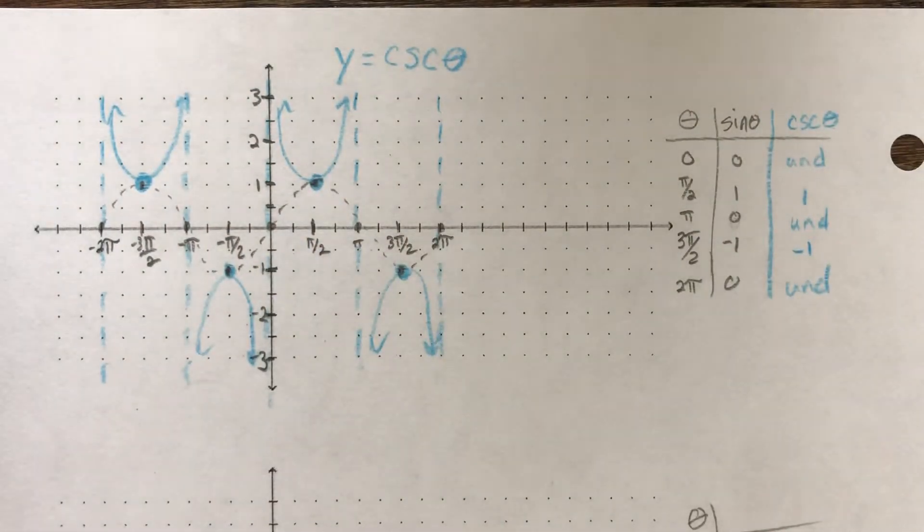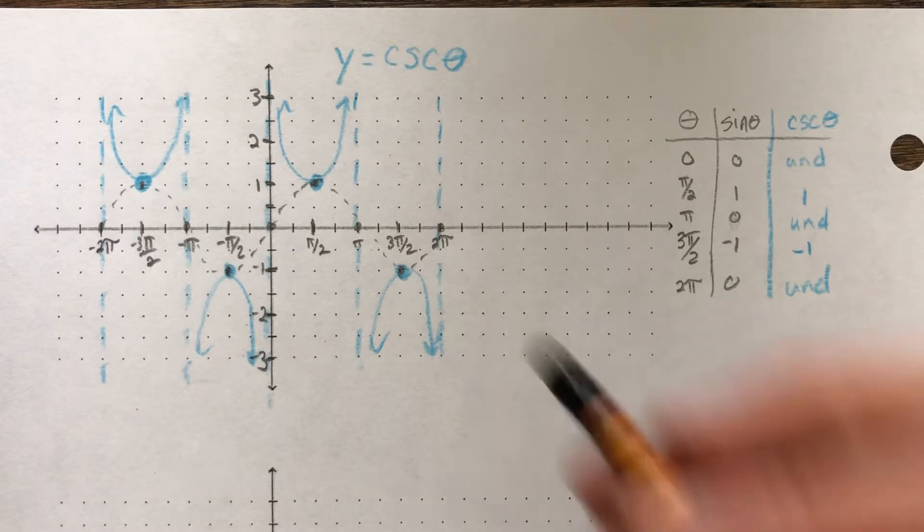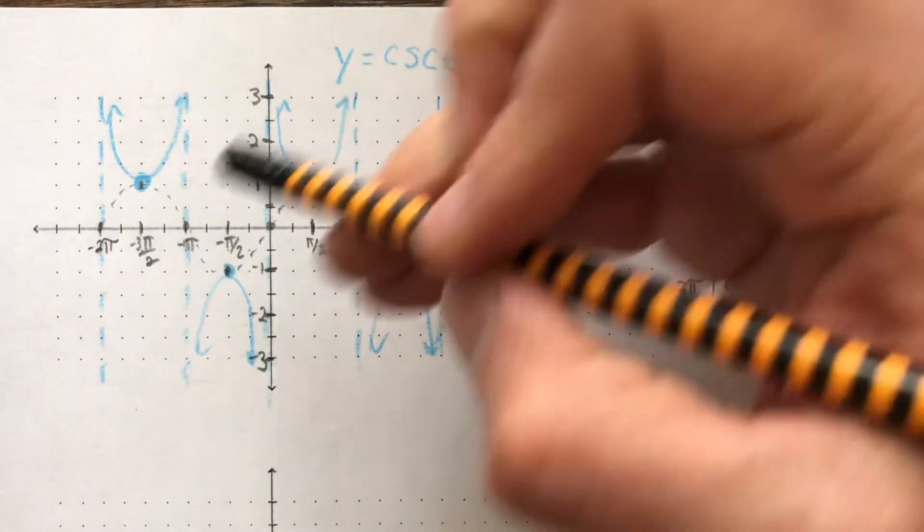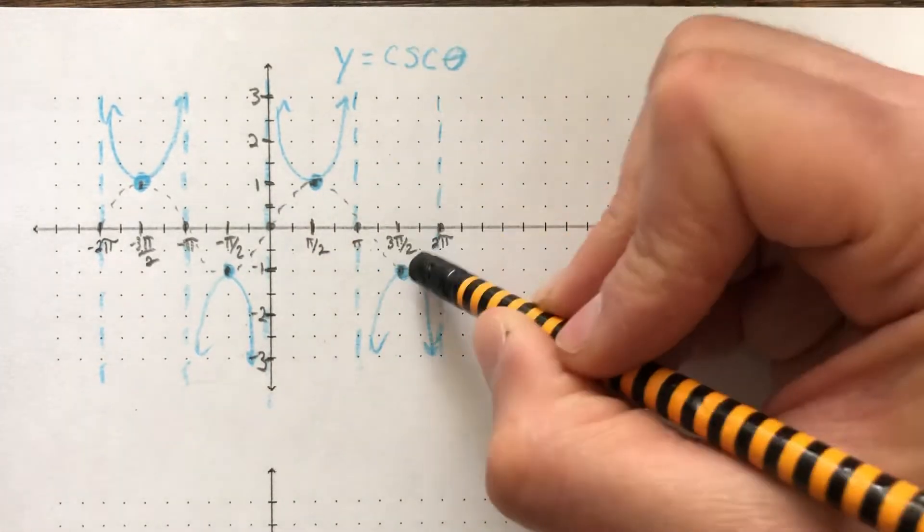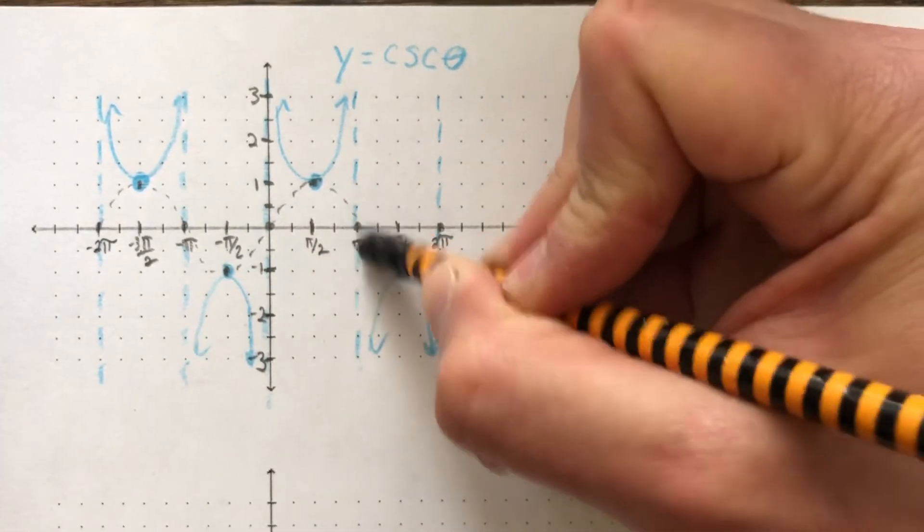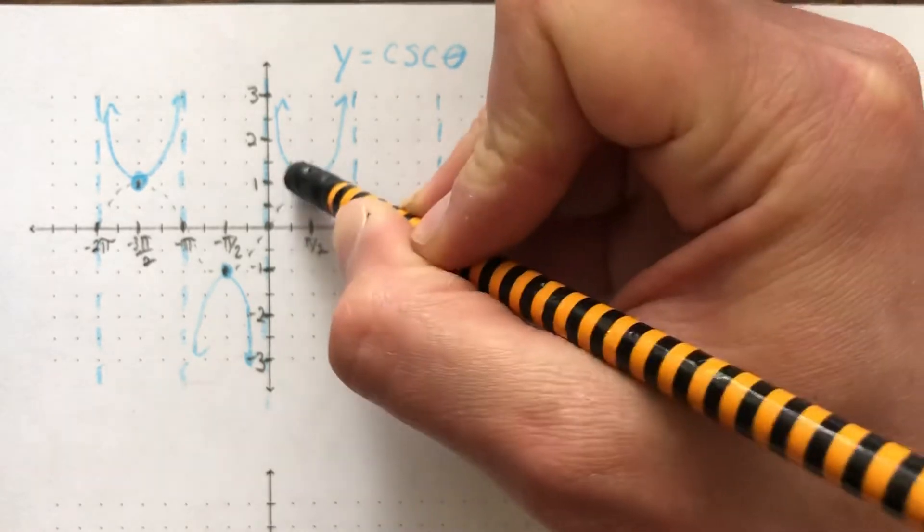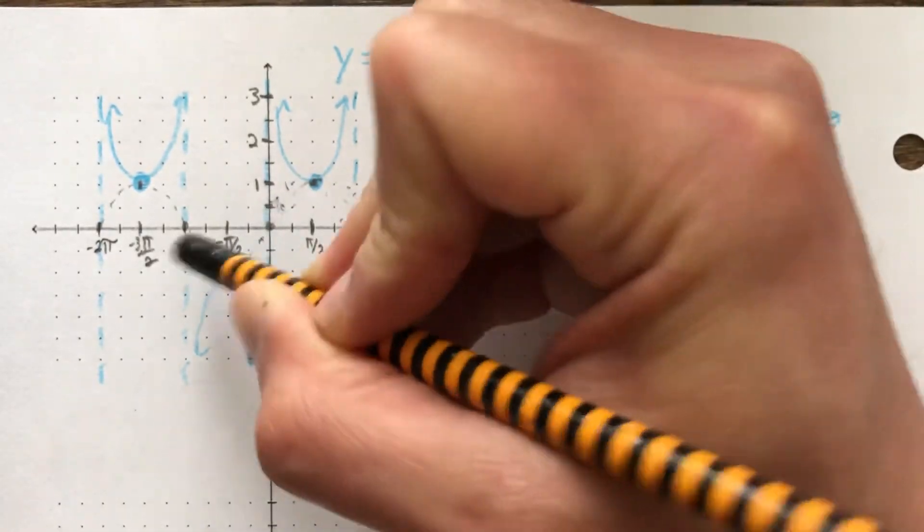Flip the U in between the asymptotes. And it looks just like that, okay? Now I'm going to get rid of, you really don't need, I just kind of lightly sketched in the sine graph to give us a good idea of what it looks like, but you really shouldn't have that in there. So I'm going to go ahead and erase it.